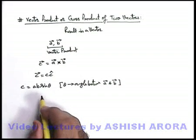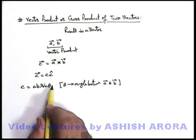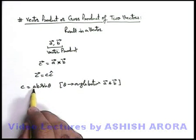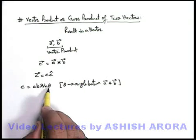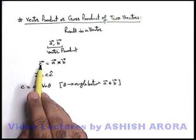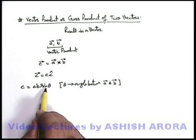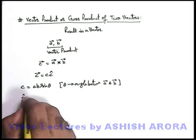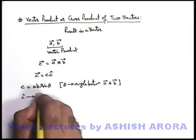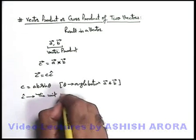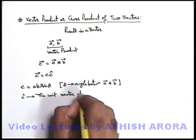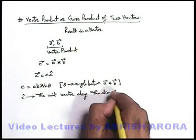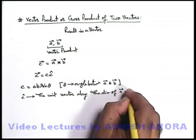Unlike the case of dot product, where the result of the dot product of two vectors a and b can be written as ab cosθ, here the magnitude of the resulting vector is ab sinθ. And c-cap is the unit vector along the direction of a cross b.